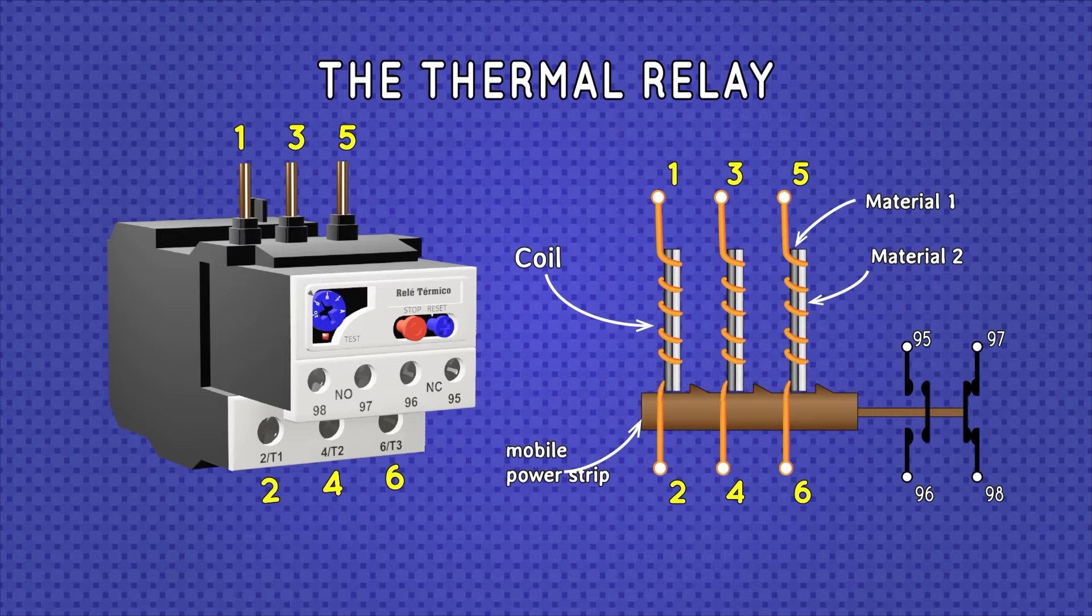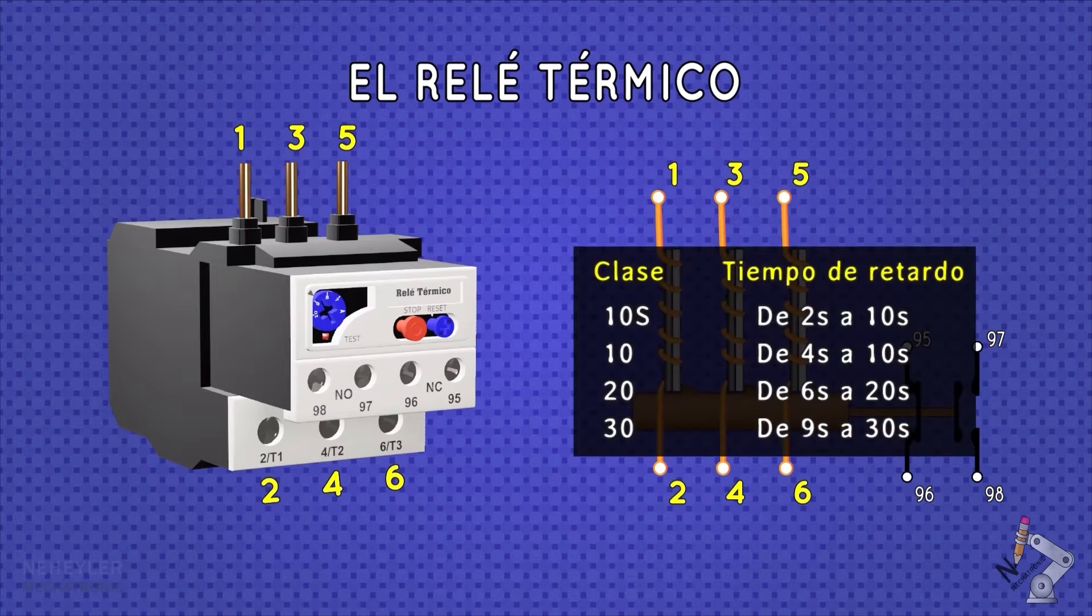These will return to their initial position automatically if the reset button is in automatic mode. Otherwise, you have to press the button manually to reset its contacts. The time it takes for the relay to generate the trip depends on the class to which it corresponds, which is shown in the table.